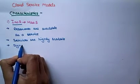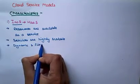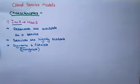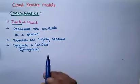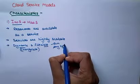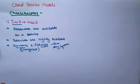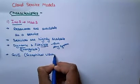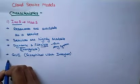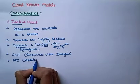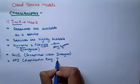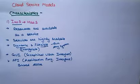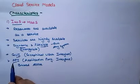The third characteristic is dynamic and flexible. Dynamic means changeable — we can change the configuration of any infrastructure or hardware provided by the cloud system. Flexible means we can run it on any system. The next characteristic is GUI and API based access. GUI means graphical user interface. We can access any type of graphical user interface services and application-level services with the help of IaaS.